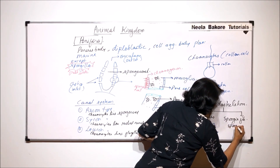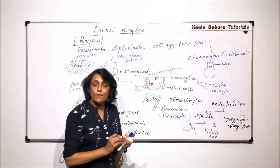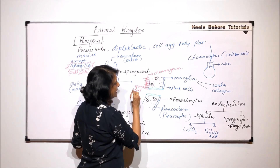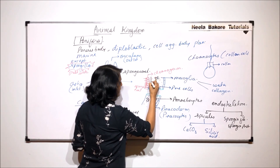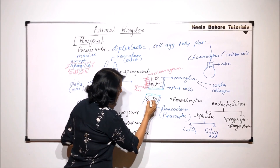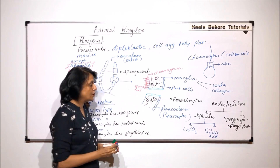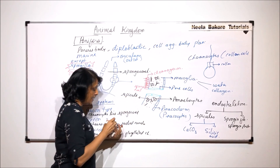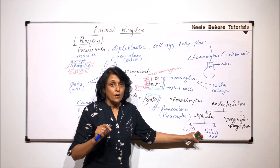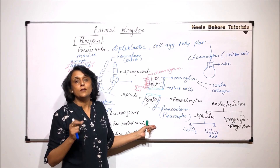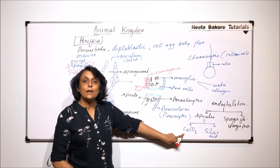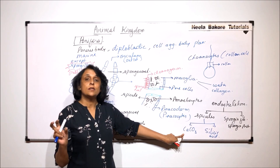Spongy fibers are made up of spongin protein, forming a soft thread-like network. Spicules are needle-like and pointed, and can be unbranched or branched. Porifera is further classified into classes based on the type of endoskeleton. For example, sponges with calcium carbonate spicules are known as Calcarea.